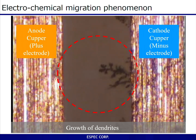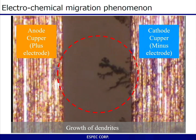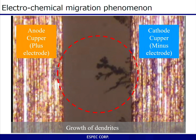The actual electrochemical migration occurs gradually over a period of about five days. The ionized metal from the anode gradually moves to the cathode on the right, forming the dendrite, and it grows over time, spreading out like a branch.